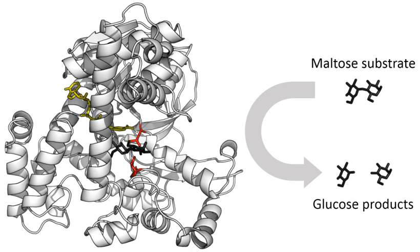Enzyme production — transcription and translation of enzyme genes — can be enhanced or diminished by a cell in response to changes in the cell's environment. This form of gene regulation is called enzyme induction. For example, bacteria may become resistant to antibiotics such as penicillin because enzymes called beta-lactamases are induced that hydrolyze the crucial beta-lactam ring within the penicillin molecule. Another example comes from enzymes in the liver called cytochrome P450 oxidases, which are important in drug metabolism. Induction or inhibition of these enzymes can cause drug interactions. Enzyme levels can also be regulated by changing the rate of enzyme degradation. The opposite of enzyme induction is enzyme repression.